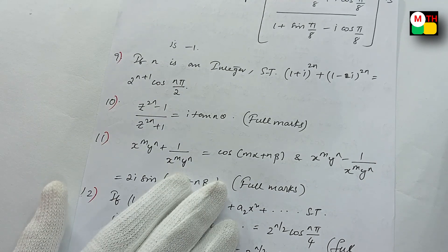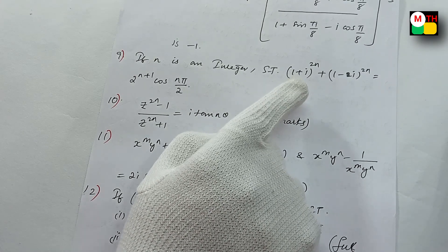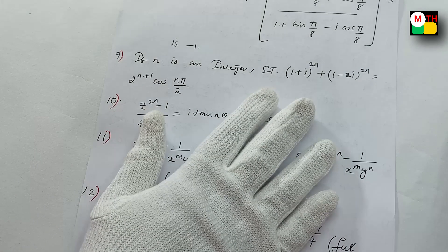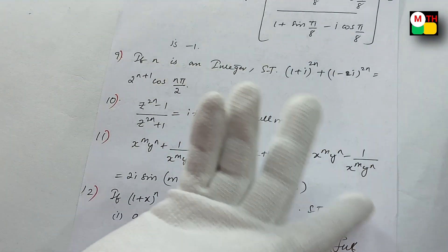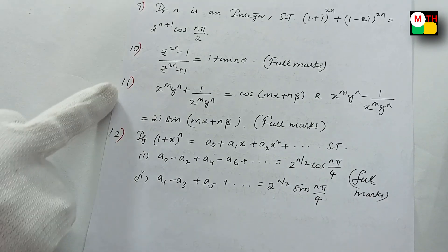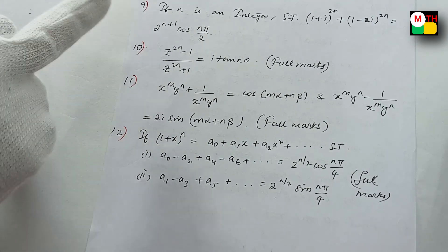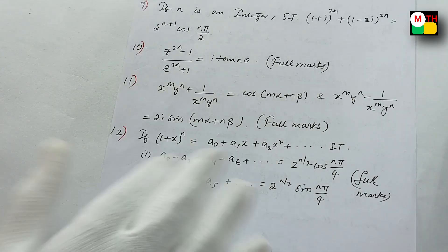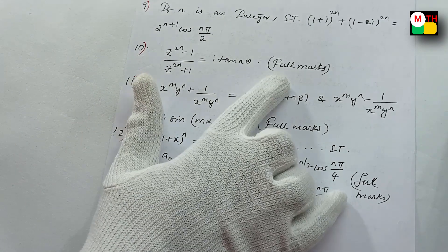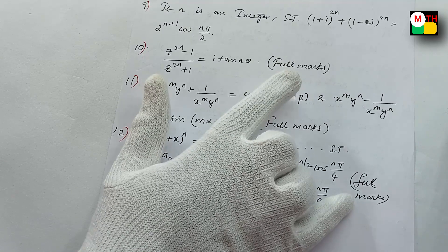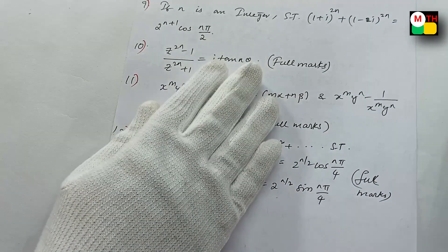And the ninth sum: choose 1 plus i whole power 2n. And this is 2n. If you are going to get the pre-final sum, you will need to do these. Next, choose the 10th and 11th sums. In full marks, you will need to do the first nine sums.